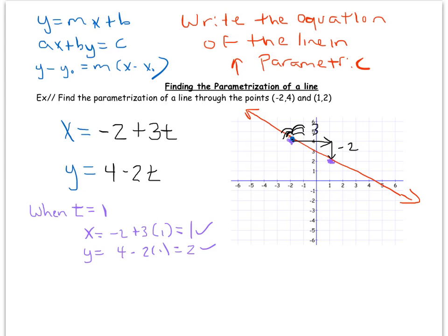One thing to note is that the slope of the line is present in our parametric equations. The slope in rectangular form is rise over run, which is negative two over three. You can see our negative two and our three as the coefficients of t — every t seconds the spider moves down two and right three, which is just another way of saying it's moving along this line.